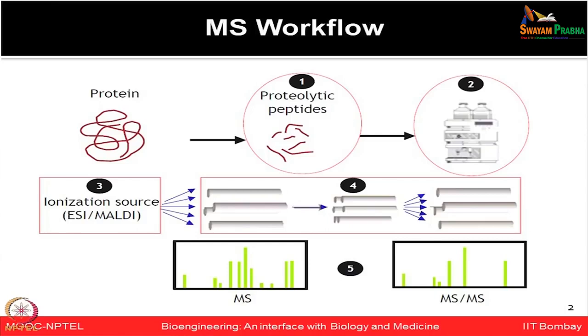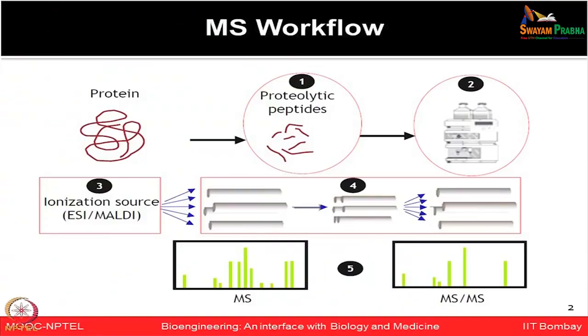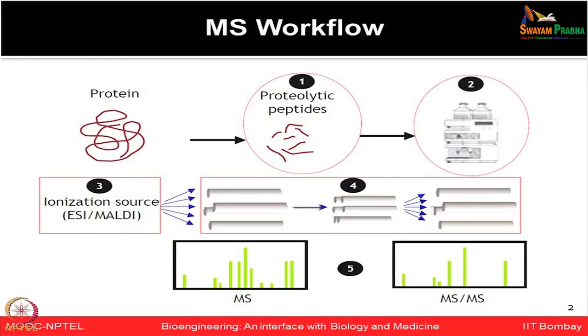These peptides can be further separated by liquid chromatography-based methods. You then ionize the proteins in solution form using an ionization source to move them inside the mass spectrometer. You separate them by mass-to-charge ratio using different mass analyzers, and depending on whether you use one or two mass analyzers, you can perform either MS or MS/MS-based analysis.